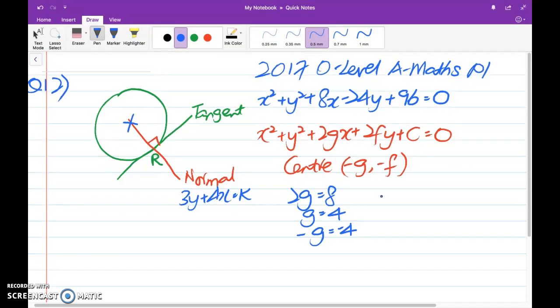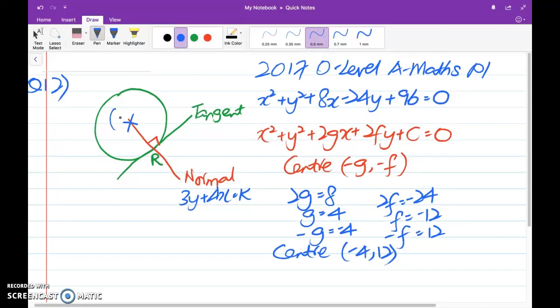Similarly, for 2f, by observing this equation as given to us, it is equals to negative 24, f is equals to negative 12, negative f is equal to 12. So we conclude center of the circle is basically negative 4 comma 12. Let me just update on the diagram here. negative 4 comma 12.